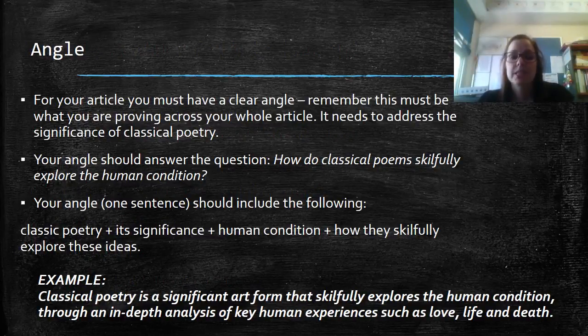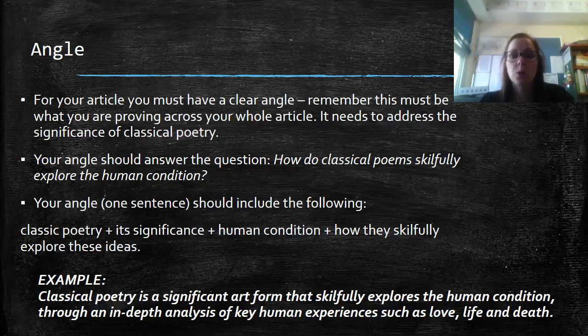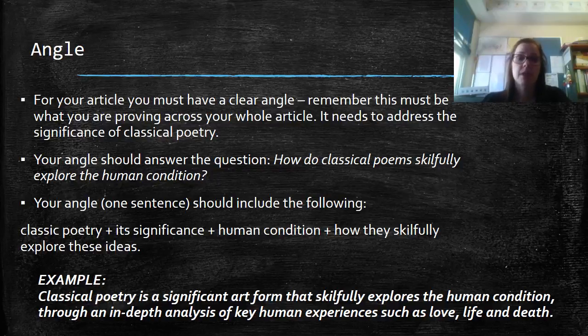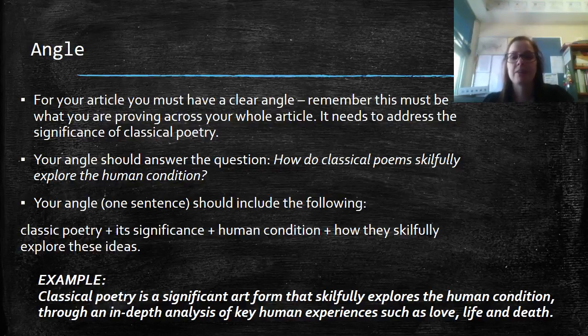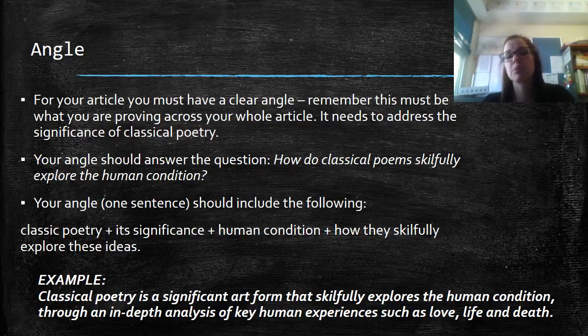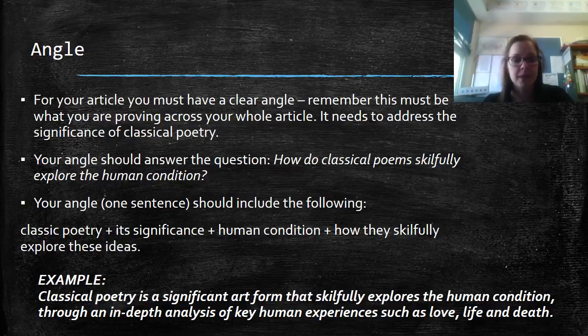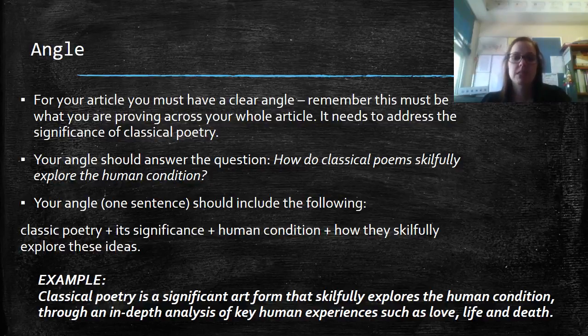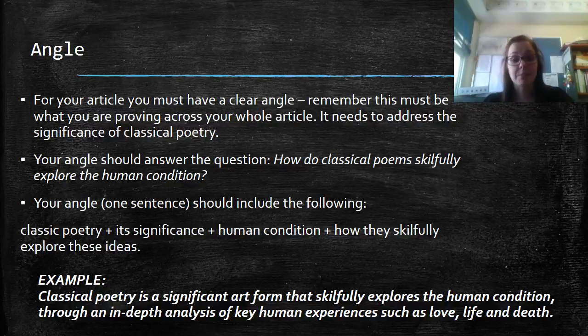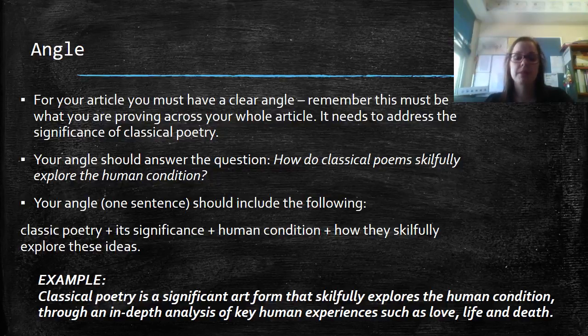As we mentioned in the example, you need to have an angle. For your article, you must have a clear angle and this is what you are proving across the whole article. It needs to address the significance of classical poetry. Your angle should answer the question, how do classical poems skillfully explore the human condition? Now remember, this is our practice question. So the question on the exam might have a different adjective in there. Your angle is one sentence and needs to include poetry, its significance, the human condition, and how they skillfully explore these ideas. For example, classical poetry is a significant art form that skillfully explores the human condition through an in-depth analysis of key human experiences such as love, life, and death.